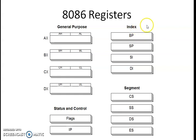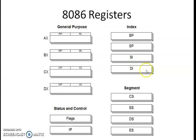Index and pointer registers are used to hold memory addresses. The base pointer register stores the starting address of the stack segment. SP holds the address of the stack top. The source index (SI) and destination index (DI) registers are used in string manipulation operations — for example, moving a string from one memory location to another, or string concatenation and comparison operations.